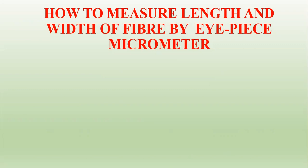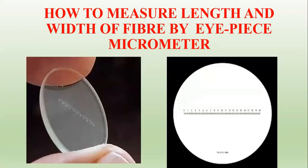We saw the calibration of the stage micrometer and eyepiece micrometer. By utilizing the stage micrometer, we are going to calibrate this eyepiece micrometer. This is the eyepiece micrometer that is to be utilized for microscopical examinations. By utilizing this eyepiece micrometer, we are going to measure the length and diameter of the fiber which are observed in the microscope.